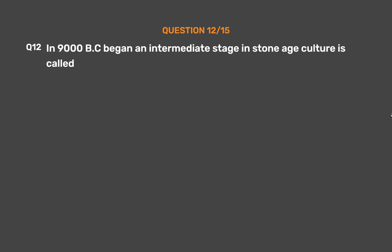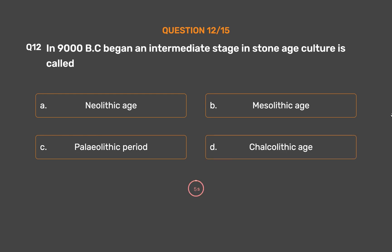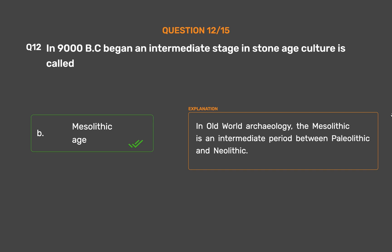Question number twelve. In 9000 BC began an intermediate stage in Stone Age culture, which is called: Option A - Neolithic age, Option B - Mesolithic age, Option C - Paleolithic period, Option D - Chalcolithic age. The correct answer is Option B: Mesolithic age. In Old World Archaeology, the Mesolithic is an intermediate period between Paleolithic and Neolithic.